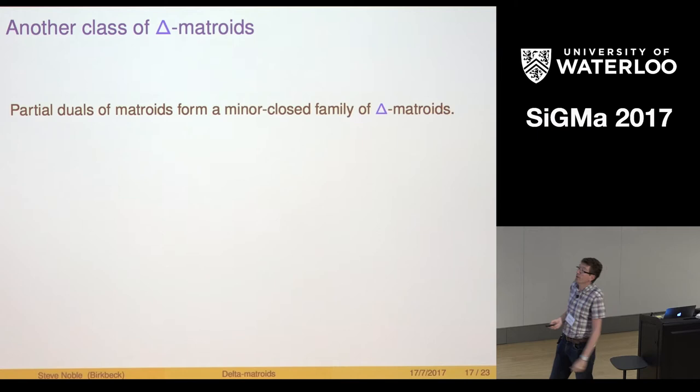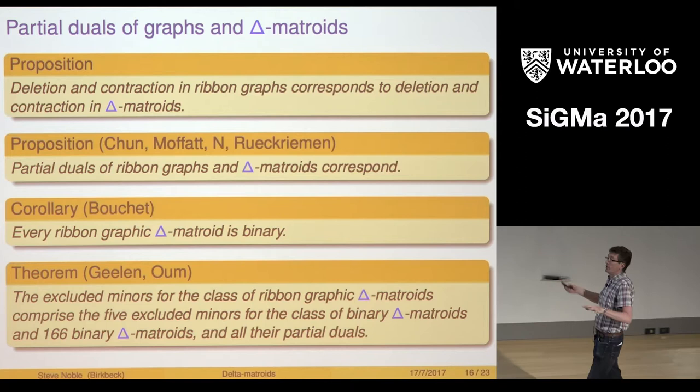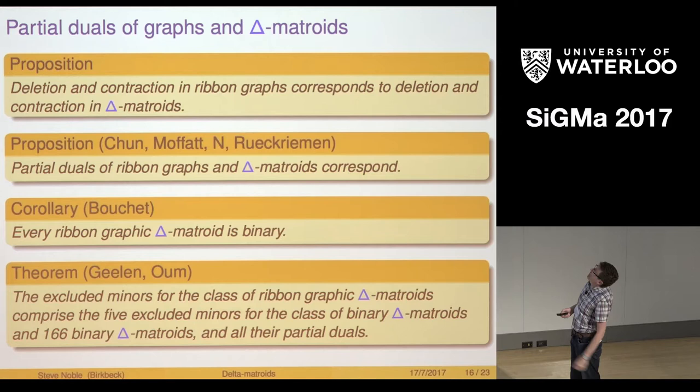We have the five excluded minors for binary and then another 166 binary delta matroids and all of their partial duals. Would you say again how do you get the delta matroid for the ribbon graph? You take the quasi trees, the one-face subgraphs.